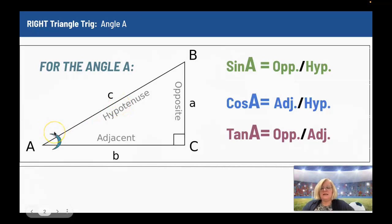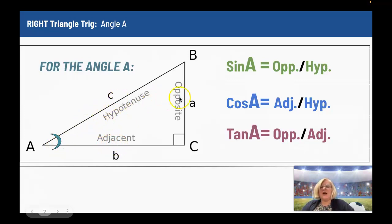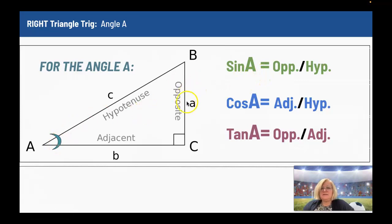If I'm looking at angle A, the side that's not the hypotenuse that makes up that angle is the adjacent side, and then across from that is the opposite side. So the sine of A is the opposite side, little a, divided by the hypotenuse, little c. The cosine of A is the adjacent side, little b, divided by the hypotenuse, little c.